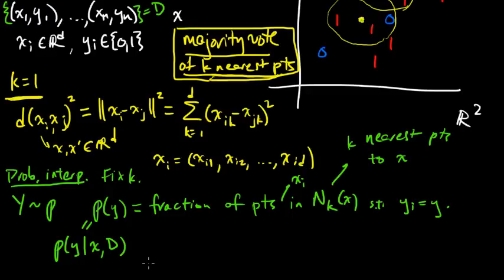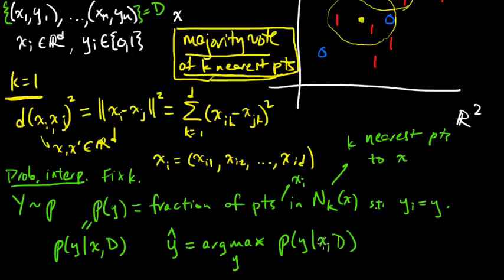And then you would classify, you would predict, we use hat to denote an estimate or a prediction. So you would predict the value of y for which this fraction is maximized. So for x, the label that you would predict is, you take for each possible value, in this case y is just taking values 0 or 1. So for 0, you compute this thing, the fraction of points. And then for 1, you compute the fraction of points. And then you choose the value of y for which that was maximized. This is exactly reproducing this majority vote, just putting it in a little bit of a probabilistic framework.